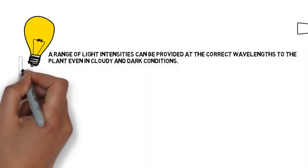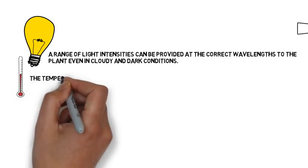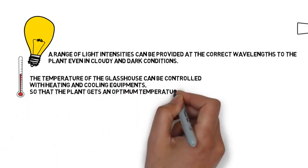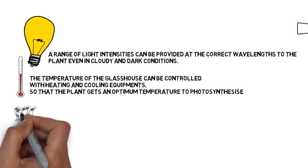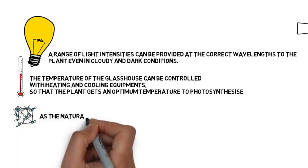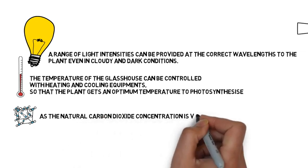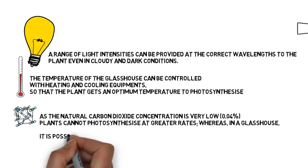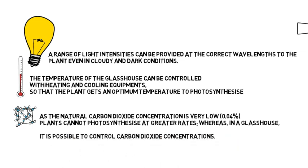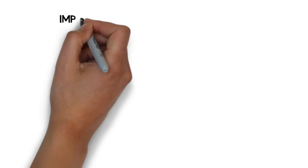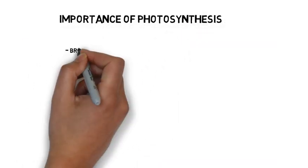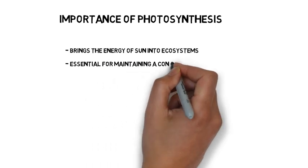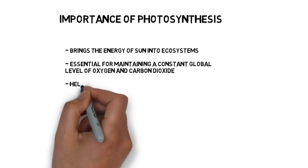The temperature of the glasshouse can be controlled with heating and cooling equipment so that the plant gets the optimal temperature to photosynthesise. As the natural carbon dioxide concentration is very low — 0.04% — plants cannot photosynthesise at greater rates, whereas in a glasshouse it is possible to control carbon dioxide concentrations. The importance of photosynthesis: it brings the energy of the sun into ecosystems, it is essential for maintaining a constant global level of oxygen and carbon dioxide, and it helps to stop the level of carbon dioxide rising too high.